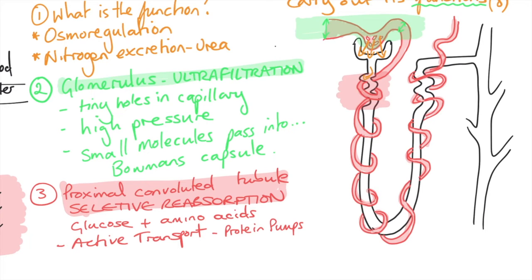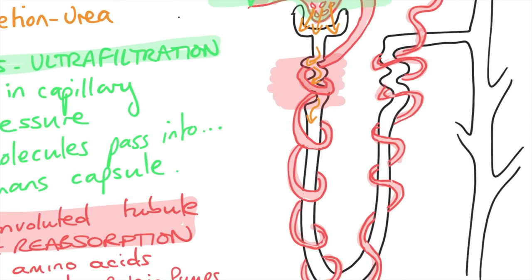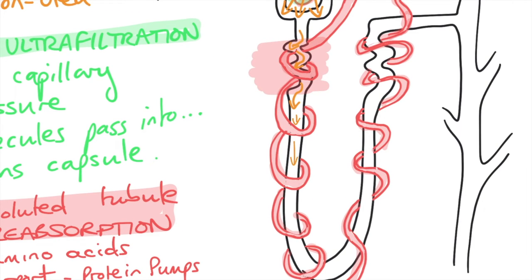Let's put it in a nutshell. The glomerulus is for ultrafiltration and the proximal convoluted tubule for selective reabsorption. And what is it reabsorbing? It's reabsorbing glucose, amino acids through active transport and the filtrate continues. What's in the filtrate? Water and salt.